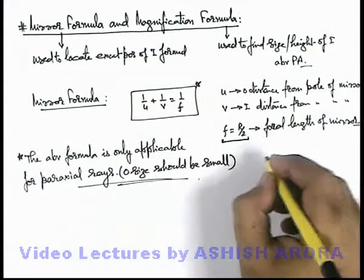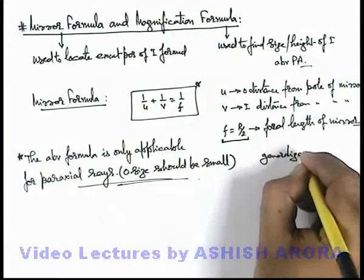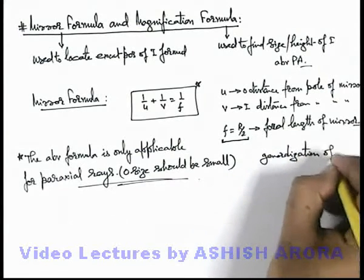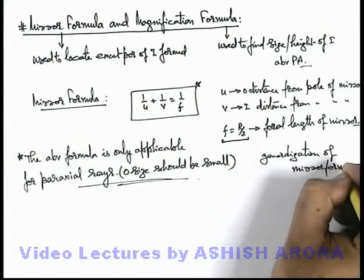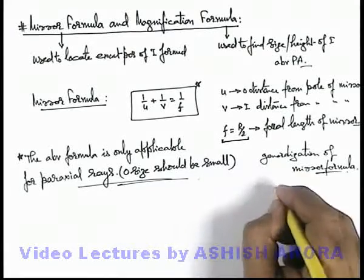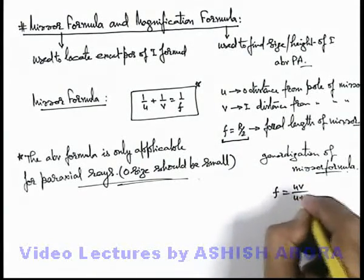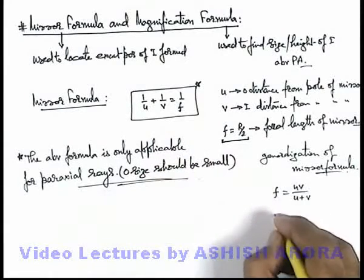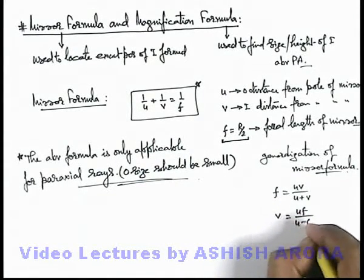The same formula can also be generalized. If we talk about generalization of mirror formula, just for ease of calculations whenever we are required to find a focal length, the focal length here we can write as f = uv/(u+v). If we are required to find the image position, this can be written as v = uf/(u-f).